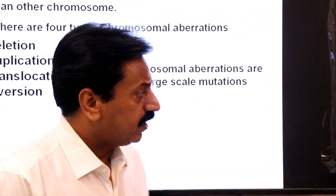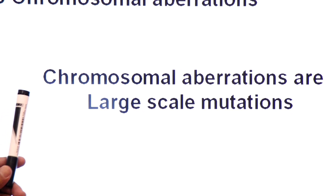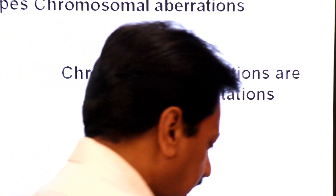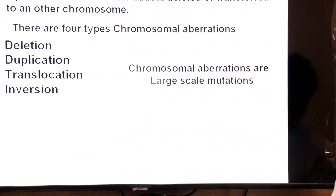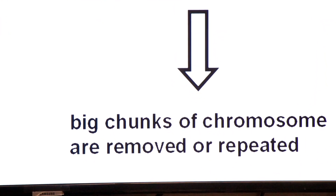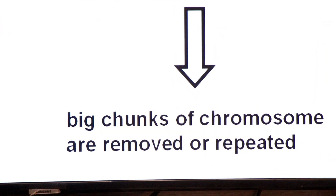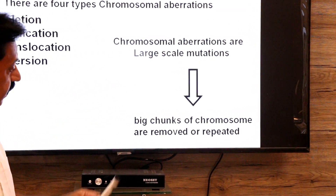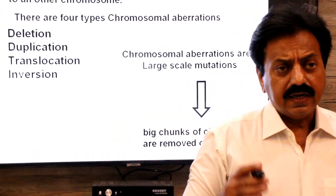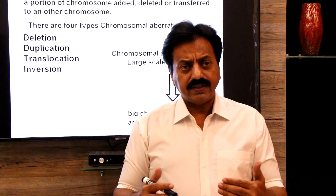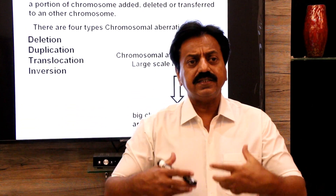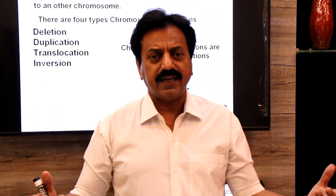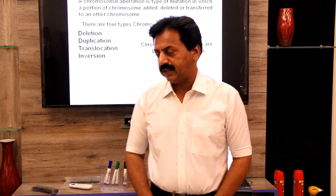Chromosomal aberrations are large scale mutations because big chunks of chromosomes are removed or repeated. The word 'chunks' means segments or pieces. These large scale mutations cause chromosome segments to be deleted, repeated, or transferred to another chromosome.